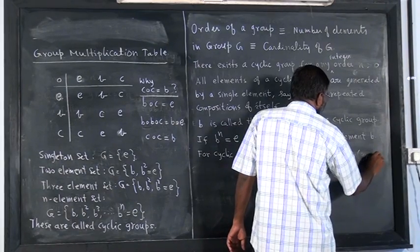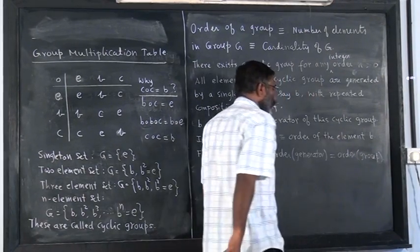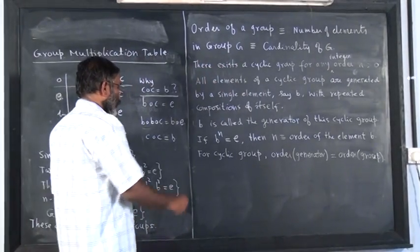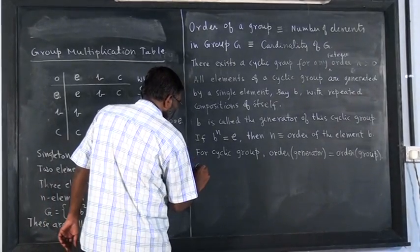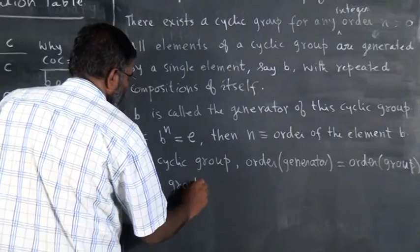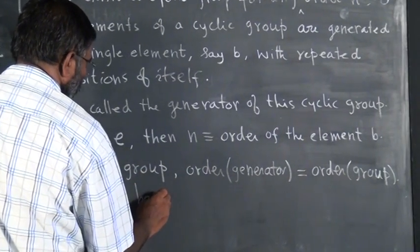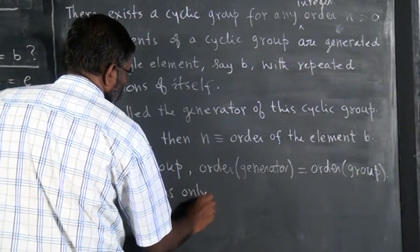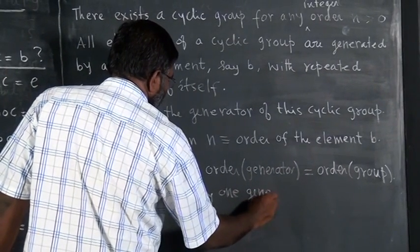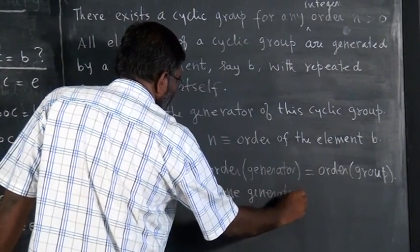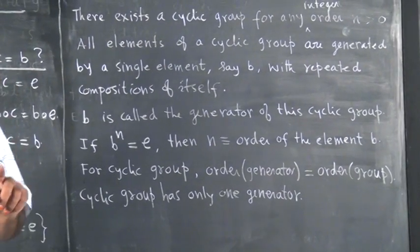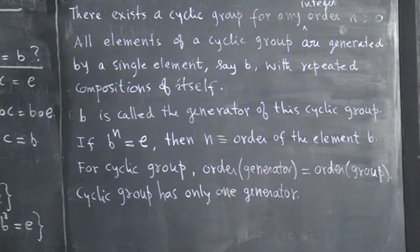This is true only for cyclic group. In other words, there will be only one generator for cyclic group. Cyclic group has only one generator. So if only one generator is there, order of the generator will be equal to order of the group.